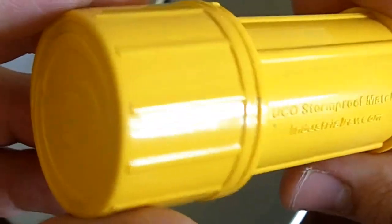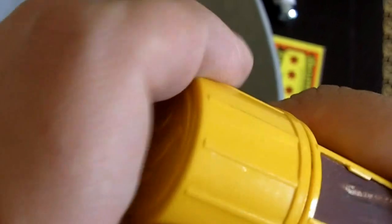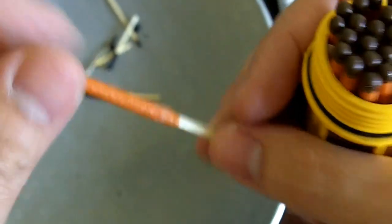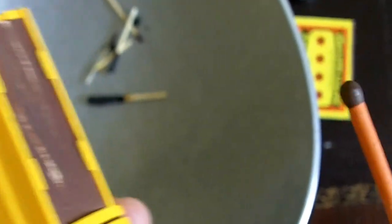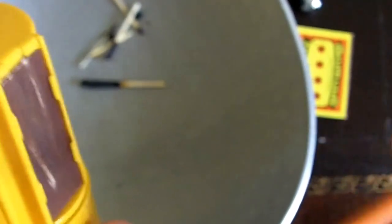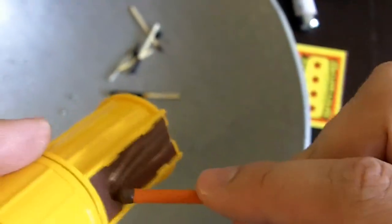This would be a good case. The best match case I found so far is this one. This one is made by UCO Stormproof Matches. UCO makes what I believe to be the best matches around. These are stormproof matches, huge matches, beautiful matches. Look at the size of this thing.